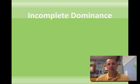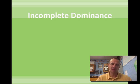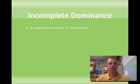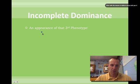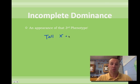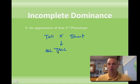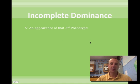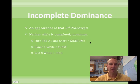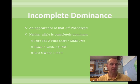The first one is incomplete dominance. It does exactly what the name implies — incomplete dominance means that neither allele is completely dominant, so you have the appearance of a third phenotype. If you go back to Mendel's experiment, he took a tall pea plant and crossed it with a short pea plant and got all tall. You probably thought he was going to get some mediums. Well, if it were governed by incomplete dominance, you would have been exactly correct — tall and short would make a medium, black and white would make a gray, red and white would make a pink. That's incomplete dominance.